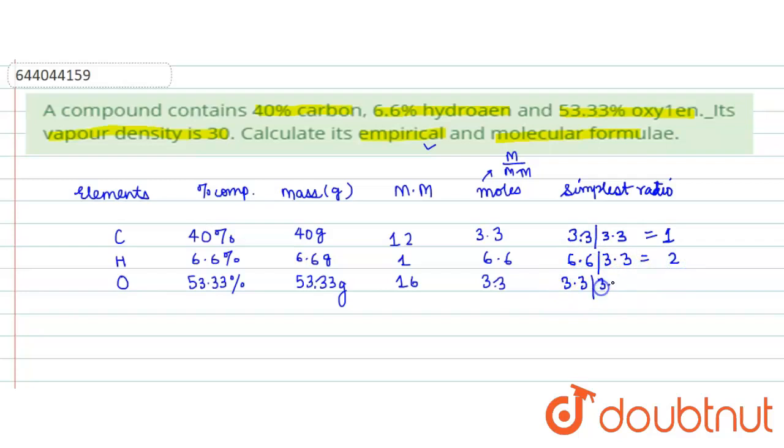And 3.3 is divided by again 3.3, that comes out to be 1. So the empirical formula for the compound is C1H2O1, that is CH2O is the empirical formula.